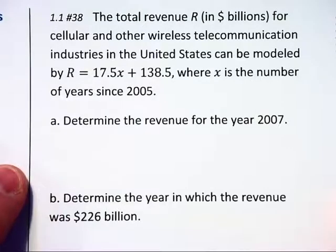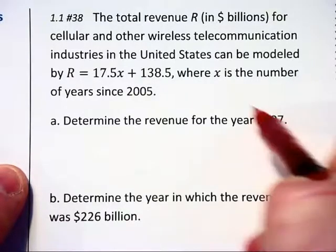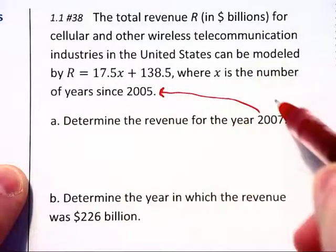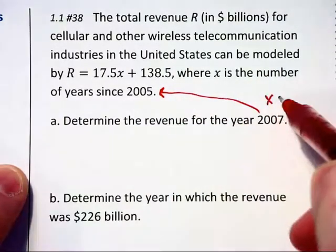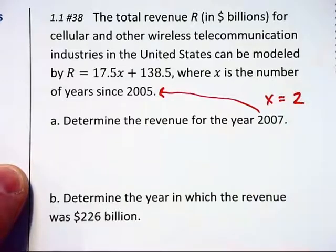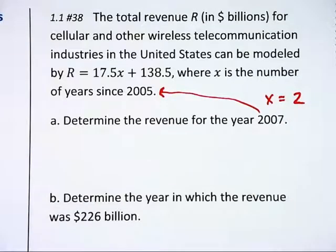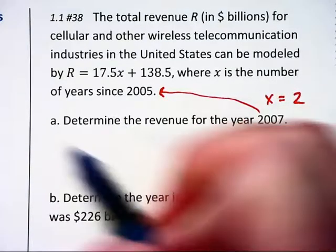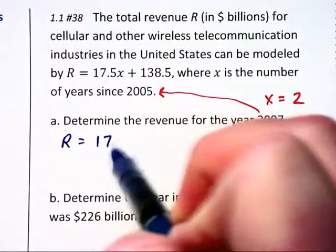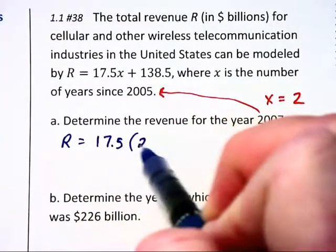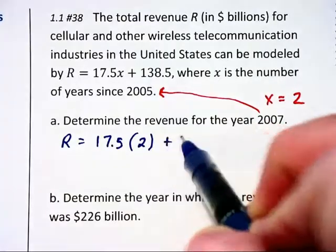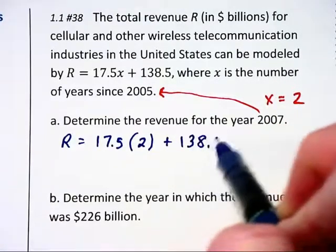Determine the revenue for the year 2007. Notice in comparing that with 2005, x is going to equal two years later. That means we are going to substitute 2 into the equation. We will have R is equal to 17.5 times 2 substituted in plus 138.5.